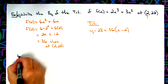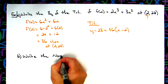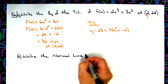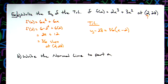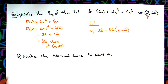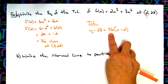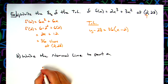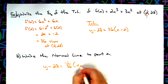Part B: write the normal line to part A. What do we know about perpendicular lines? They have negative reciprocal slopes. So I flip the slope and make it negative — the slope becomes −1/36 — and it goes through the same point. So the normal line is: y − 28 = −(1/36)(x − 2).